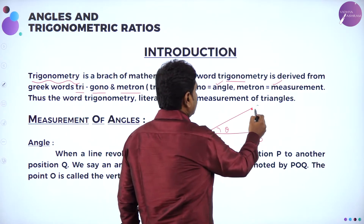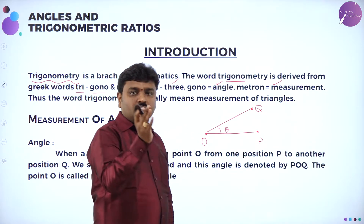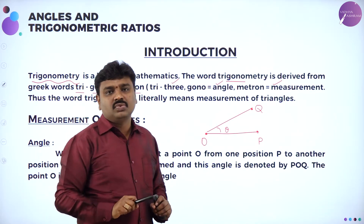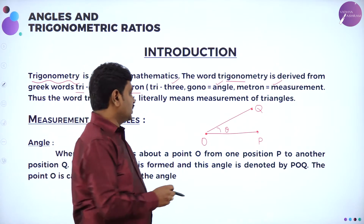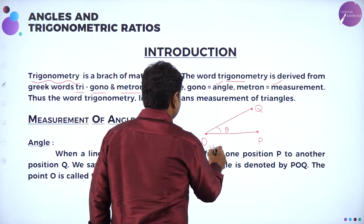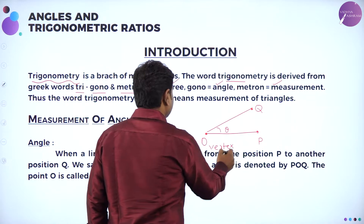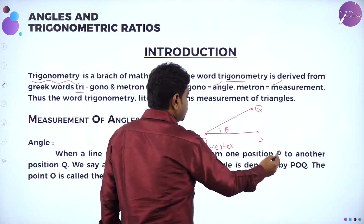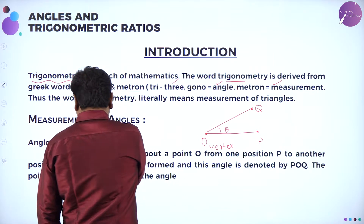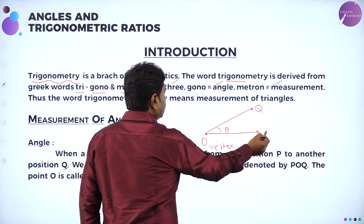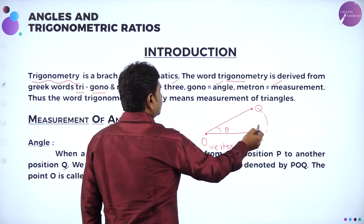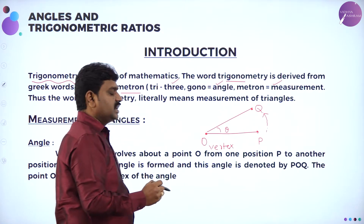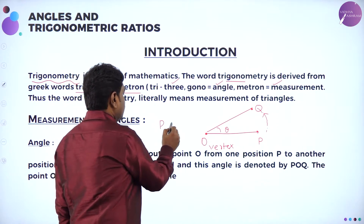The line moved from P to Q making an angle theta. Theta is called the angle made by the line, and O is the vertex. When a line revolves about a fixed point O from one position P to another position Q, it covers an angle theta. That angle is represented as angle POQ.